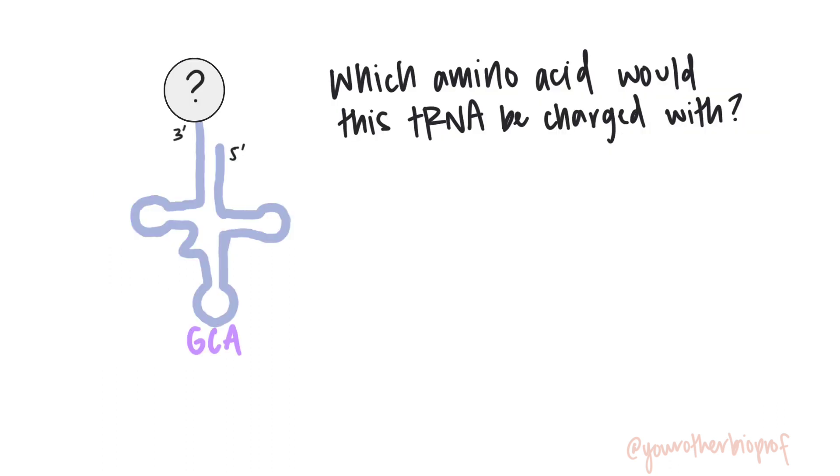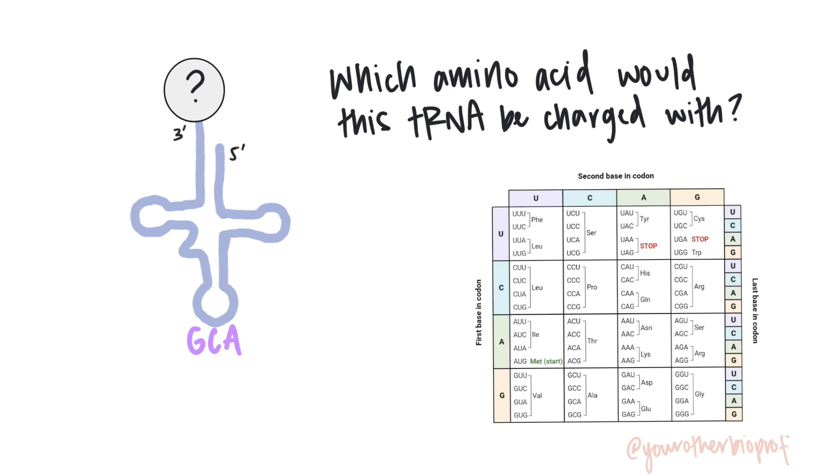Let's dive right in with a question. I've got a tRNA drawn up for you on the left side and I'm asking you which amino acid would this tRNA be charged with. It's a tRNA so it has an anticodon, but we've got a codon table not an anticodon table. So how do we figure this out? Can we use the sequence of the anticodon to figure out what codon this tRNA would pair with? Absolutely we can.